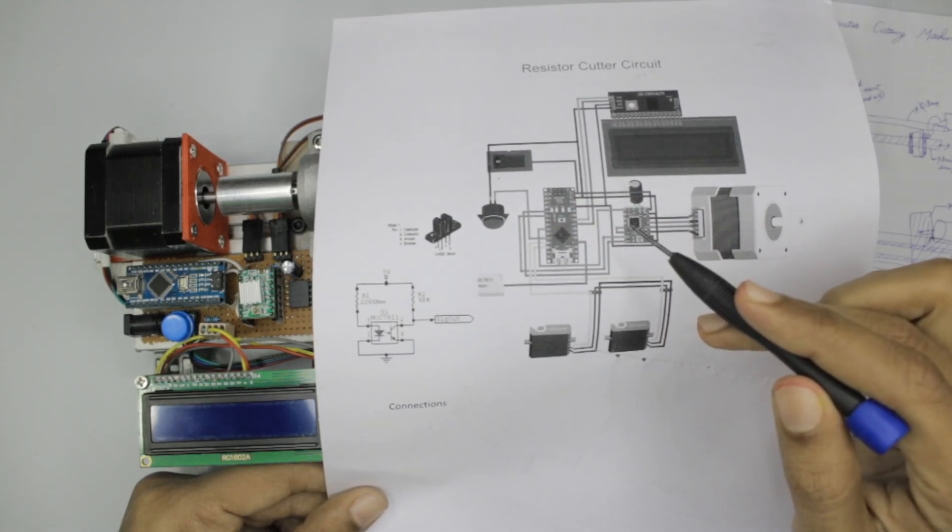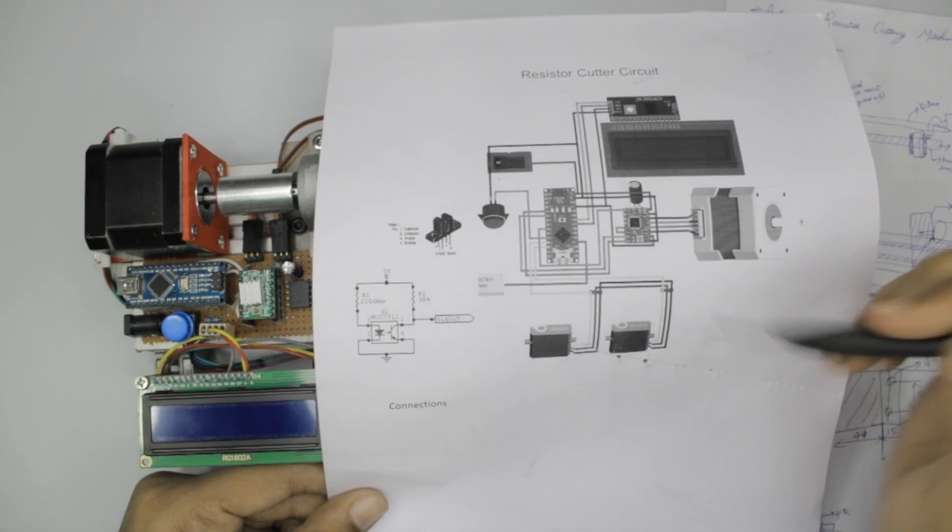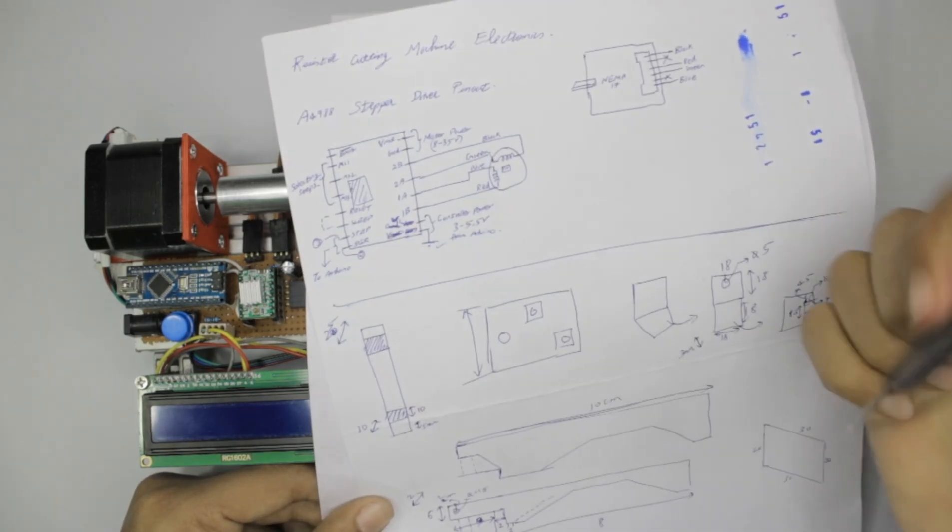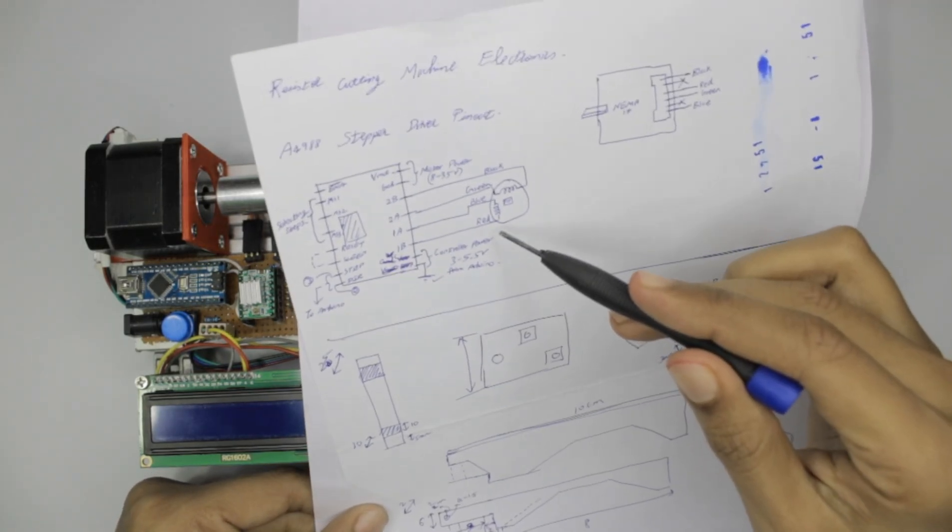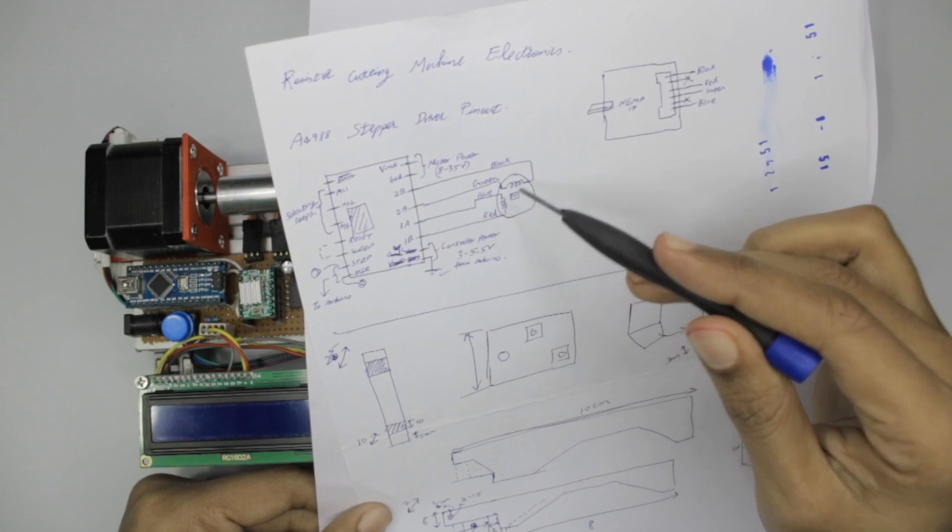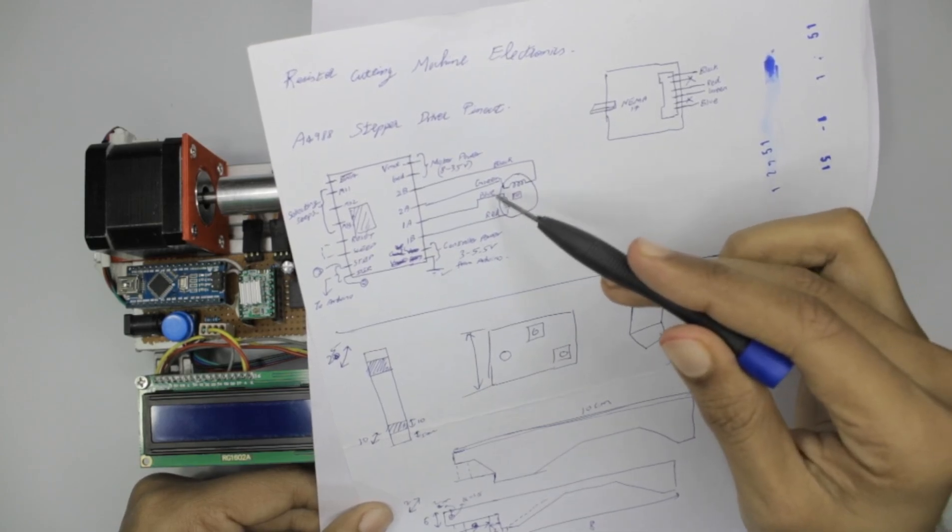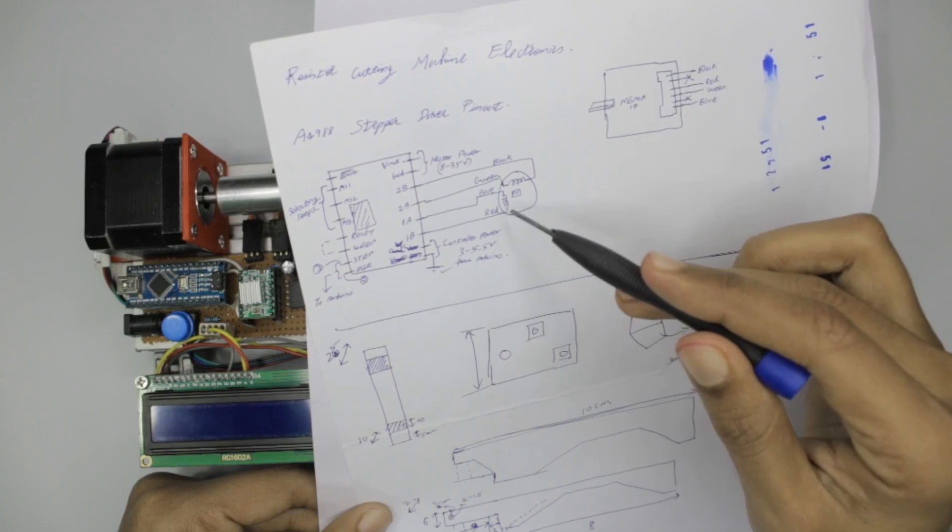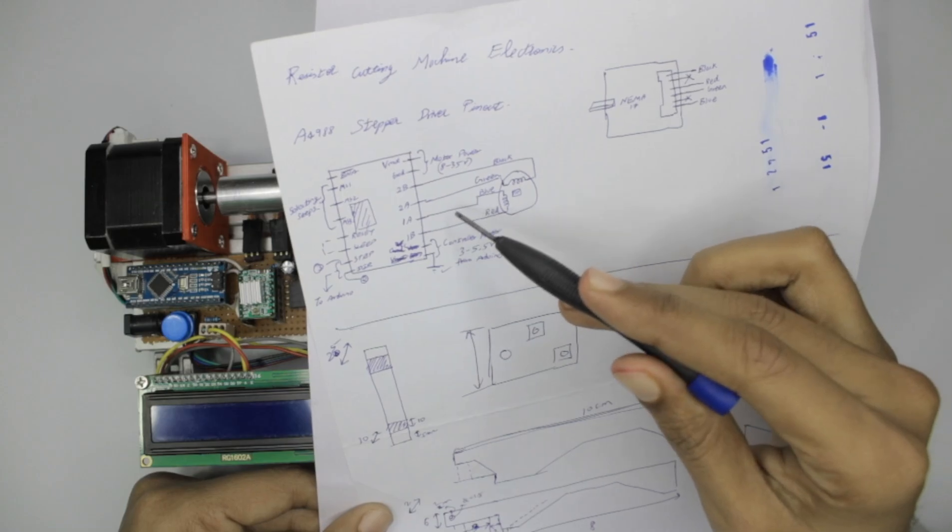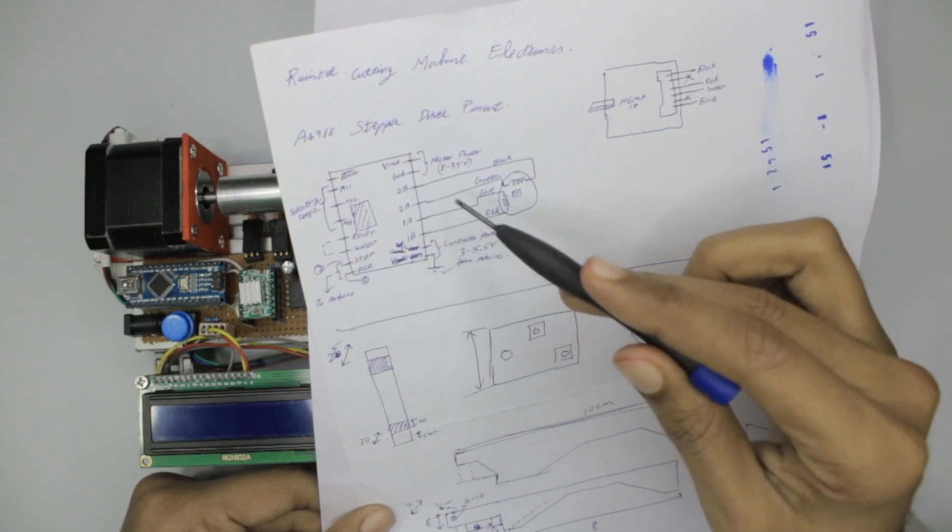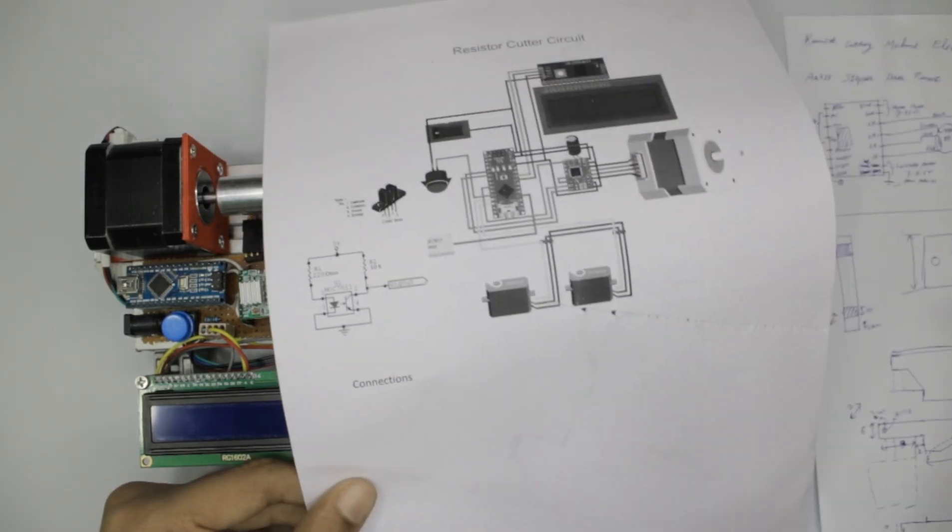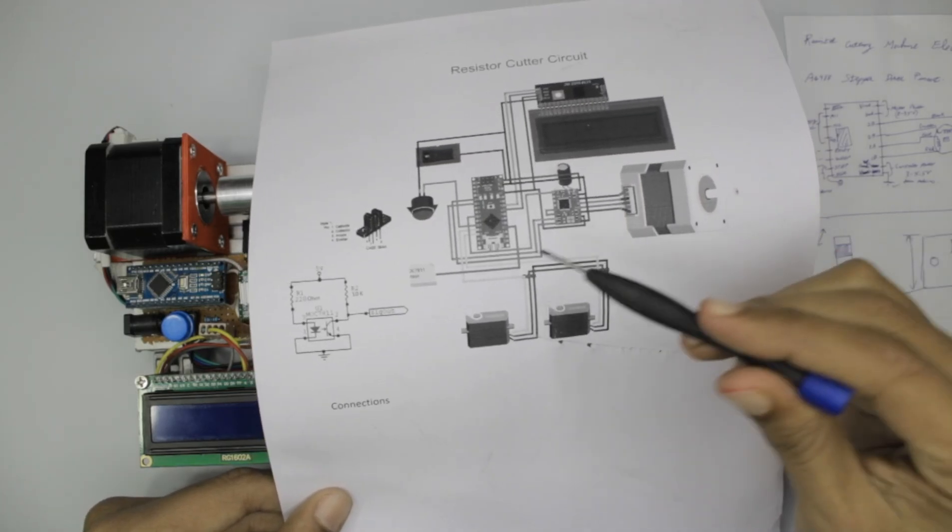We have the A4988 motor driver module. The NEMA 17 motors have two coils inside, so make sure to figure out the leads of one particular coil using a multimeter to check continuity, then connect it between A1, B1 and the other coil to A2 and B2. We have connected the NEMA motor to our A4988 and used the 5 volts from Arduino Nano to power it.